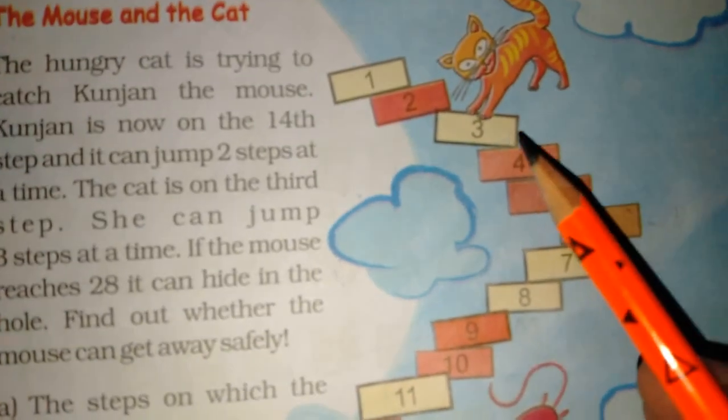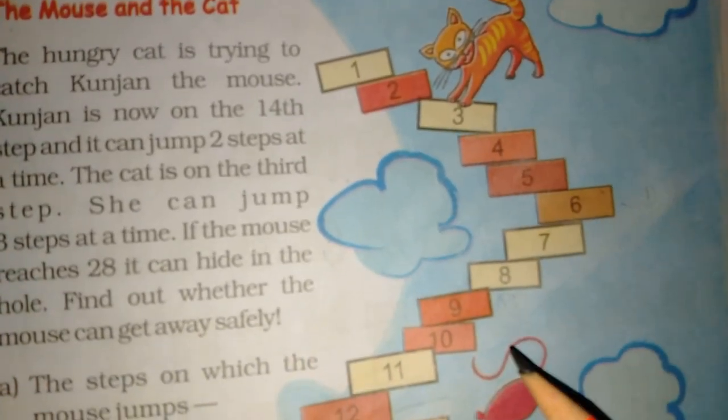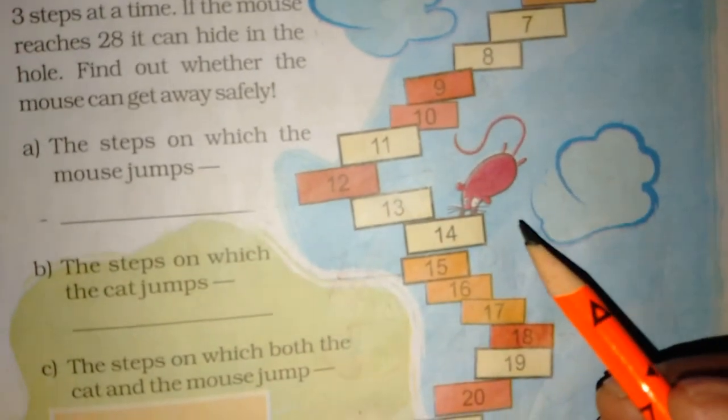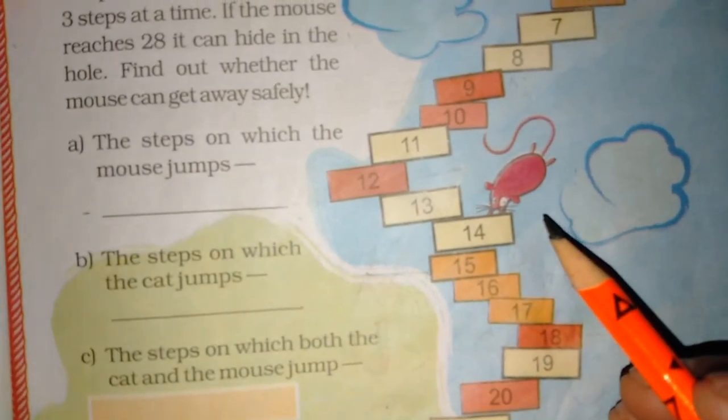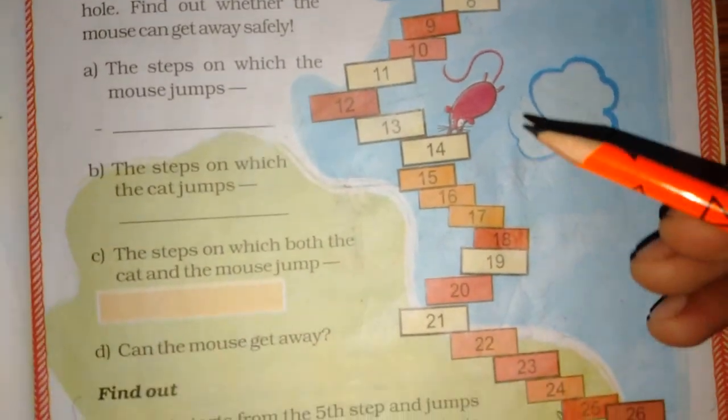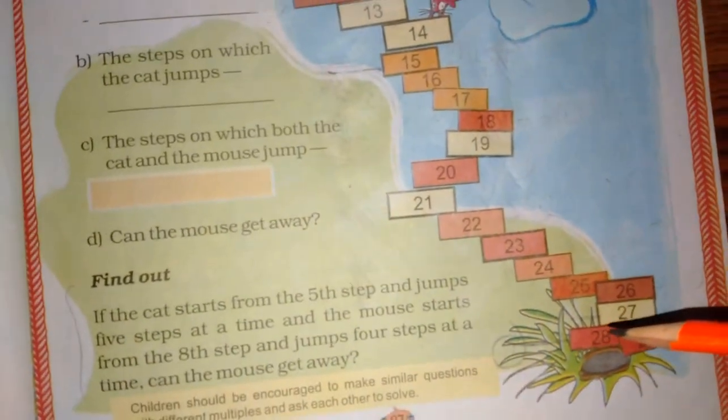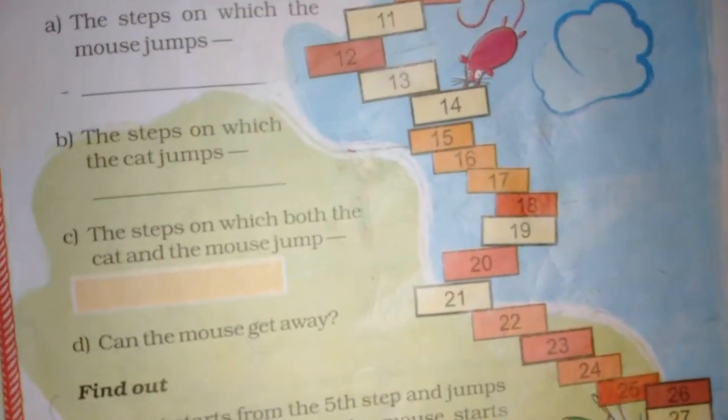You have to check whether the mouse will ever get caught or not. The cat is on the third step. How many steps can the mouse reach? Three steps.